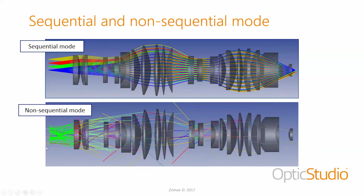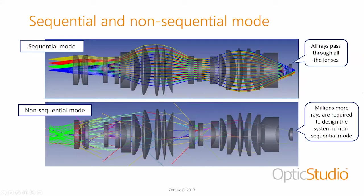In non-sequential mode, the same lenses are used but the source is very different — a more realistic source tracing rays in all different directions and from the full area of the source. These rays don't have to follow the same path; they split, scatter, reflect, and refract. The purpose of this illustration is to show that millions more rays would be required to perform the same analysis in non-sequential mode compared to sequential mode for the same system.